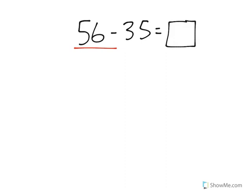Now, remember with subtraction, we start with the first number, so I'm going to represent 56 with tens and ones. In the number 56, there are five tens and six ones. That looks like this.